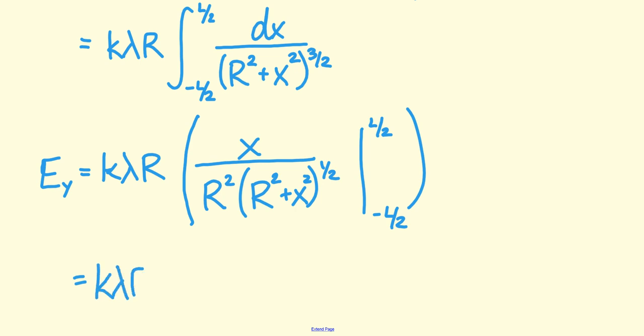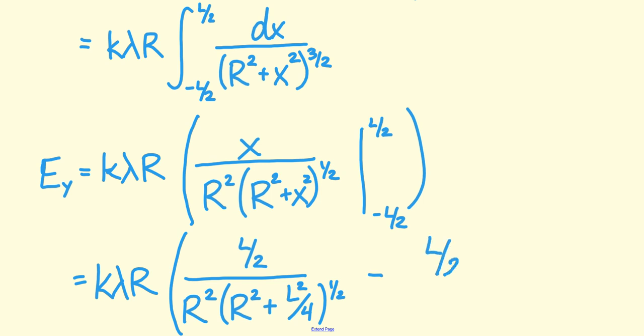So the next thing I need to do is to plug in my limits. I always plug in the upper limit first. Don't forget to square both the numerator and denominator of that L over 2. And then I subtract my lower limit. Since my lower limit is negative, really what I'm doing is adding them together. Also, that negative goes away when you square it.